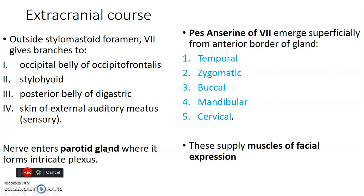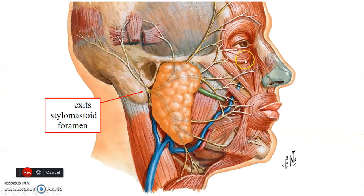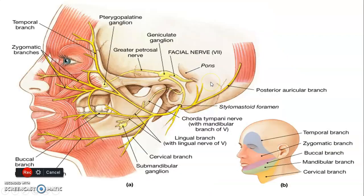Within the parotid gland, the facial nerve forms an intricate plexus called the pes anserinus — it resembles a duck's foot, which is why it's called pes anserinus of facial nerve. It emerges superficially from the anterior body of the gland and is made up of five branches: temporal, zygomatic, buccal, mandibular, and cervical branches, which supply the muscles of facial expression.